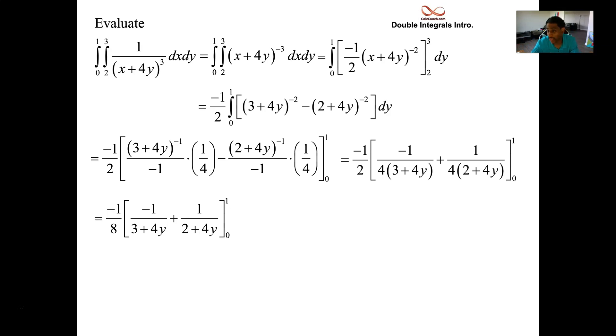If you want to pull the one fourth out, that would be a good idea too. Constants, get them out of there. It makes your job a lot easier. You don't have a calculator. So you're trying to do this mentally, this calculation. So we end up with a negative one seventh and positive one sixth. And then zero gives us negative one third and positive one half.